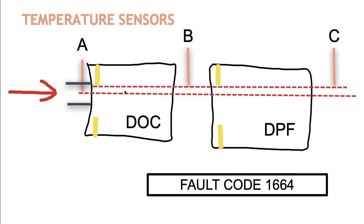We're going to start with the temperature sensors. You've got three temperature sensors in the DOC DPF assembly. Sensor A is in the exhaust pipe that came out of the turbo, measuring the temperature before it goes into the DOC. Sensor B is measuring the temperature after it comes out of the DOC, and temperature sensor C is measuring the temperature after it comes out of the DPF.